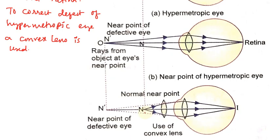Let us see how this convex lens brings the image from the least distance of distinct vision onto the retina. The object is at the near point of a healthy human eye, that is 25 centimeters in front of the hypermetropic eye. The light rays are incident on the convex lens, and after refraction, the image is formed at the near point of the hypermetropic eye. Because the object distance from this convex lens is between the optic center and the focal point, a virtual image is formed, and the extended light rays in the backward direction will intersect at the near point of the defective eye. From this point, the defective eye can see the image because the image is formed on the retina.